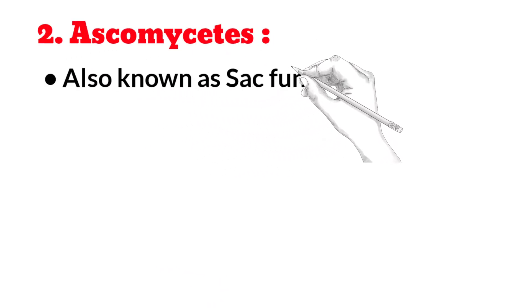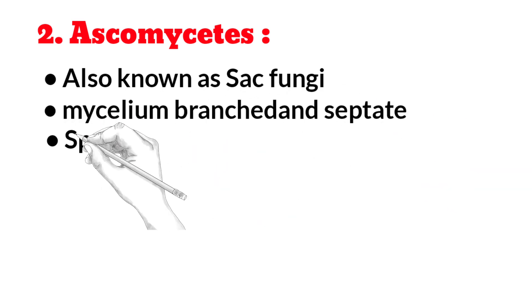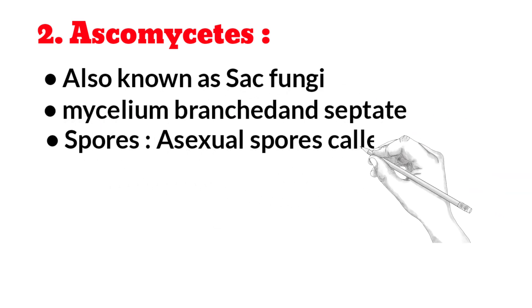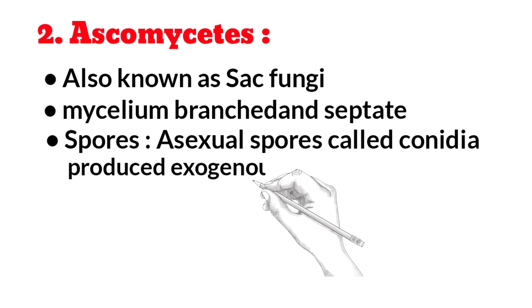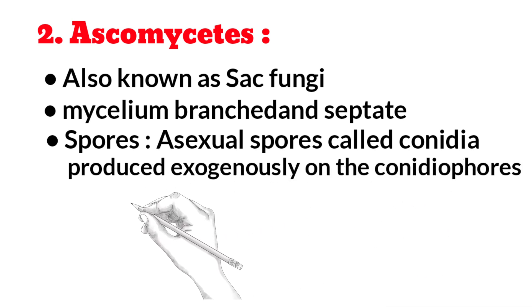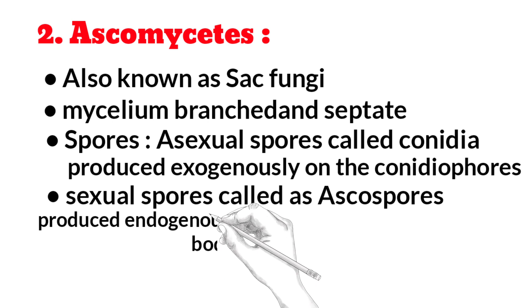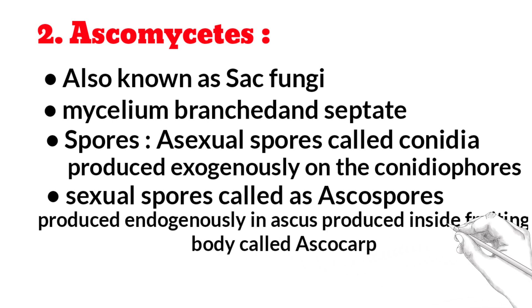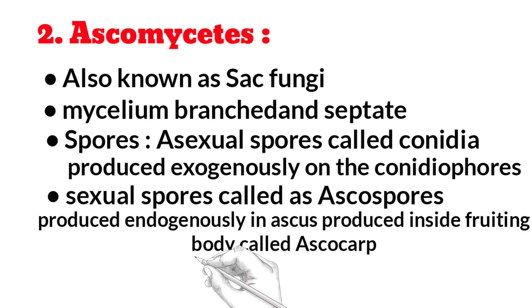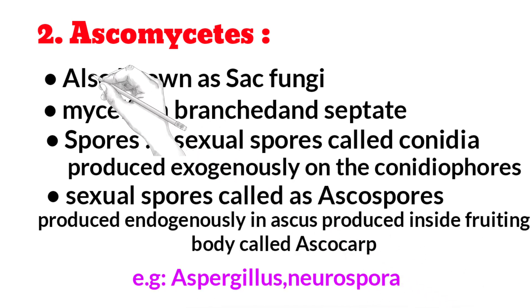Ascomycetes, also known as sac fungi. Mycelium is branched and septate. Asexual spores called conidia are produced exogenously on conidiophores. Sexual spores called ascospores are produced endogenously inside an ascus, which is produced inside a fruiting body called ascocarp.